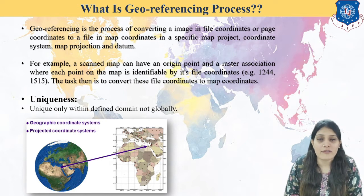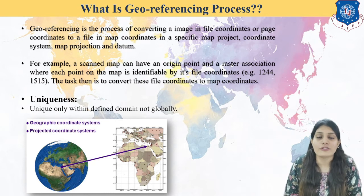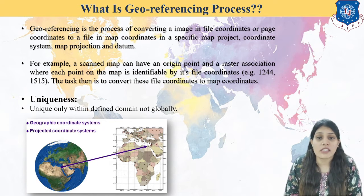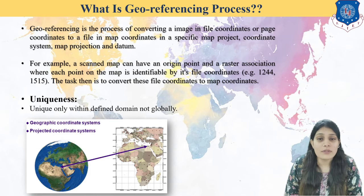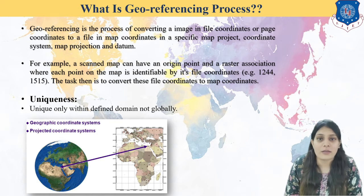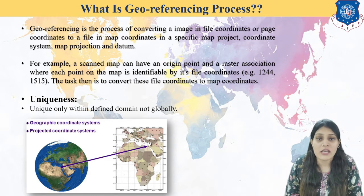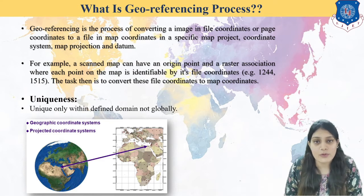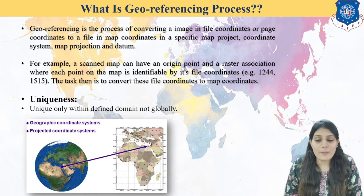The best example is when you click a picture on your mobile phone with the location service on — you get the particular location of that image, and that is known as geo-referencing. I am giving a particular location to a file — that can be a PDF, an image, or data done in AutoCAD, whether a hard copy or a scanned copy. Giving it a particular location is known as geo-referencing. A scanned map has origin points, and each point is identifiable by file coordinates.